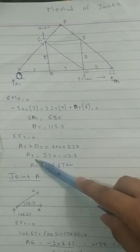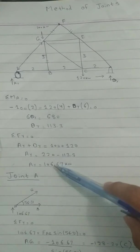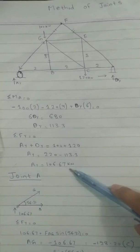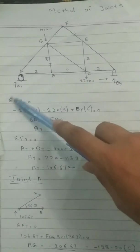And if we will take the sum of forces in y direction equal to zero, then you can calculate that Ay is equal to 106.67 kilonewton.